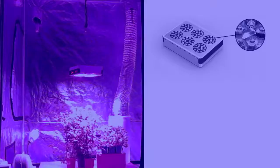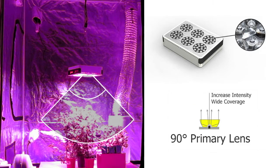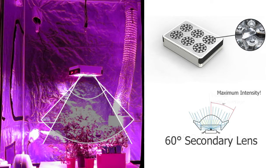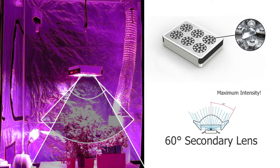Each LED also utilizes dual-lens technology, where there's a primary 90-degree lens that helps provide a wide coverage area, and a 60-degree secondary lens that helps intensify that light for maximum canopy penetration.